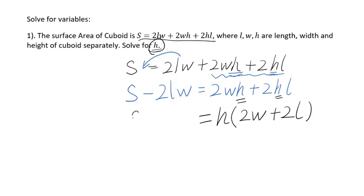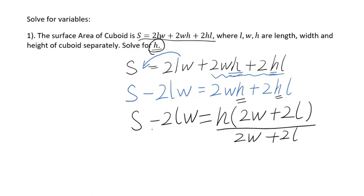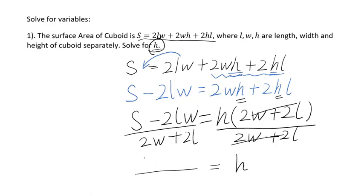On the left side we have S minus 2LW. We want to isolate H on the right side of the equation, so we need to divide both sides by 2W plus 2L. After reducing, you will get H equals S minus 2LW over 2W plus 2L.